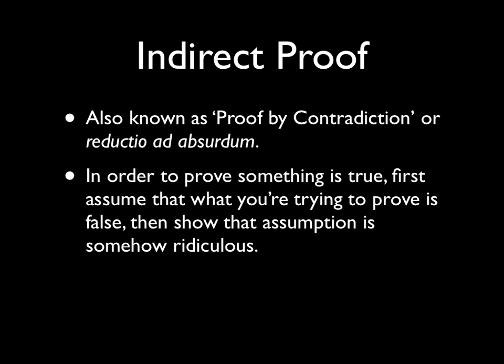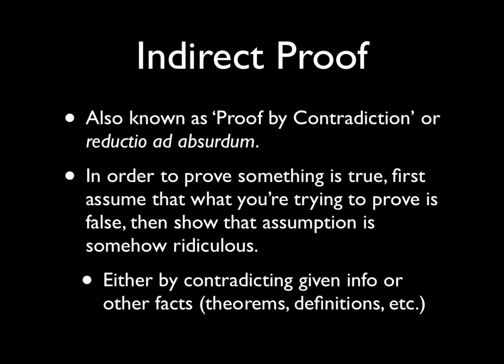In order to prove something is true, what we do is we first assume that what we're trying to prove is false, and then show that that is somehow ridiculous. It's kind of like proving using a contrapositive. So we show that the assumption is ridiculous using deductive logic, either by contradicting given information or different other facts.